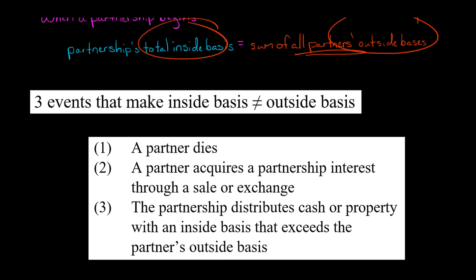Also, if the partnership were to give cash or property — if it were to distribute that to a partner — and the inside basis of whatever is being distributed, let's say it's cash of $50,000, is being distributed to a partner and that's higher than that partner's outside basis. So if the partner's outside basis were $10,000...